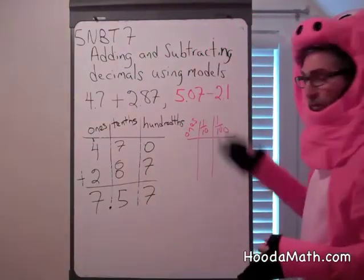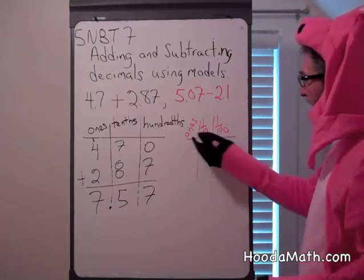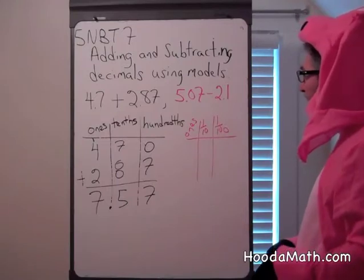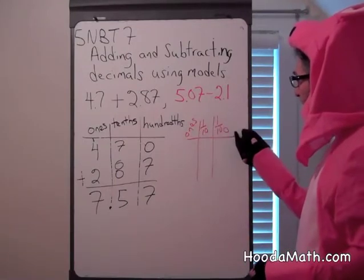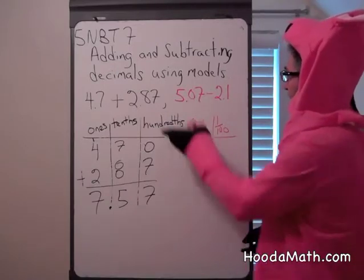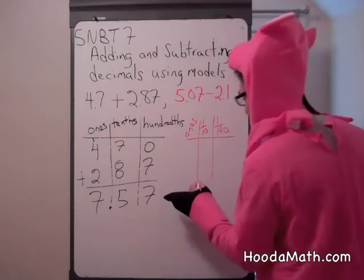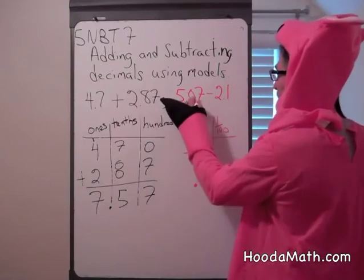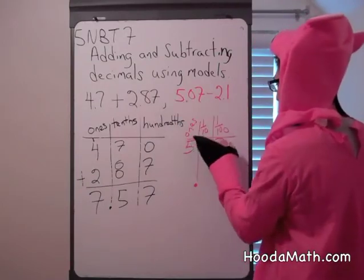Let's look at how we subtract. Similarly, we make a table — kind of a model — with columns for ones, tenths, and hundredths. We put down our decimal: five ones, zero tenths, seven hundredths.